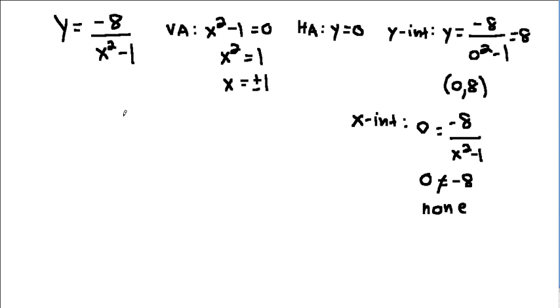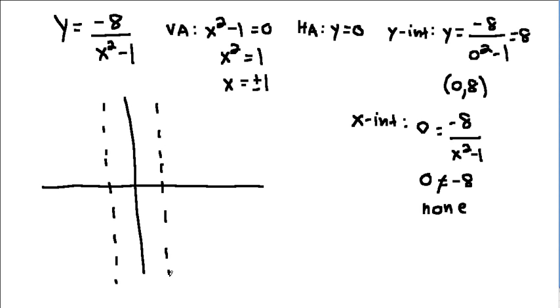Based on this information, we can begin to make a graph. So here are my axes. We have vertical asymptotes at plus or minus 1. So I'll go ahead and plot those. And we have a horizontal asymptote at y equals 0. And so here's that part of the graph. Now, we don't have an x-intercept, but we do have a y-intercept at 0, 8. So 1, 2, 3, 6, 7, 8.